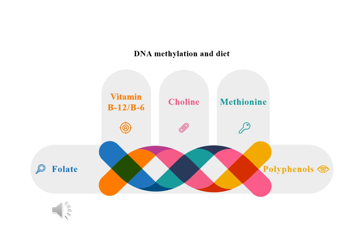DNA methylation and diet. The process of DNA methylation partly relies on several nutrients. For example, a 2014 study looked at DNA methylation of tumor cells in women with breast cancer. The study's investigators found that participants who consumed more alcohol were more likely to have decreased DNA methylation. In contrast, those who consumed a lot of folate were more likely to have increased methylation. These results support the idea that consuming certain nutrients affects DNA methylation.